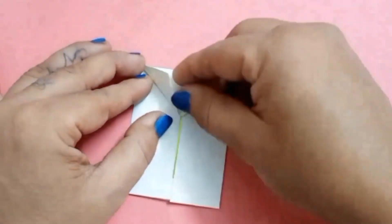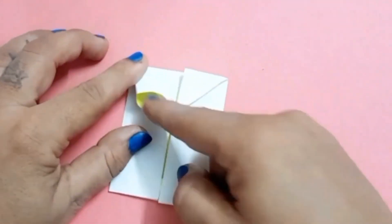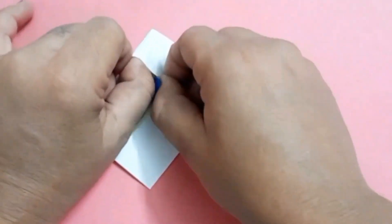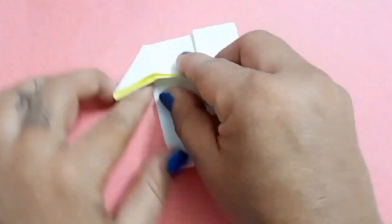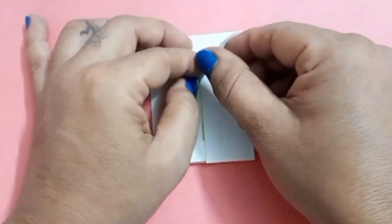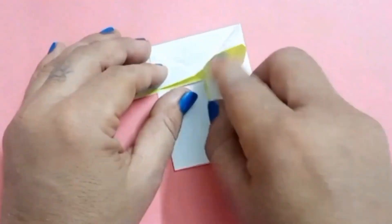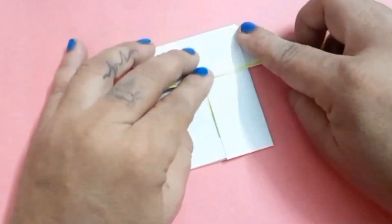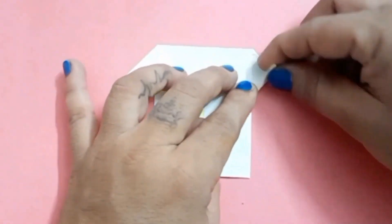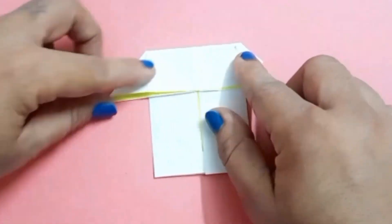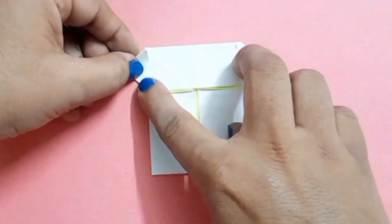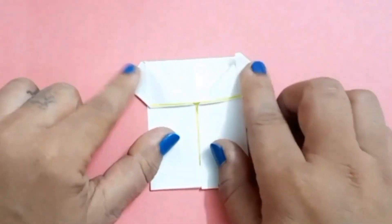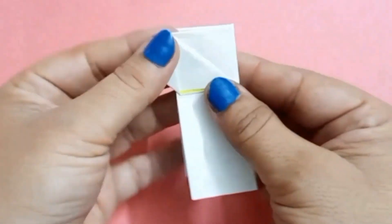Now make a triangle like this. Put finger and make a triangle. Flatten it by pressing the finger. Fold the corner towards the top side.